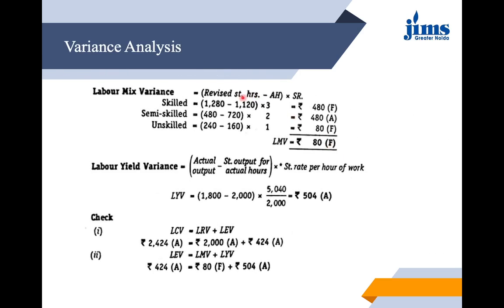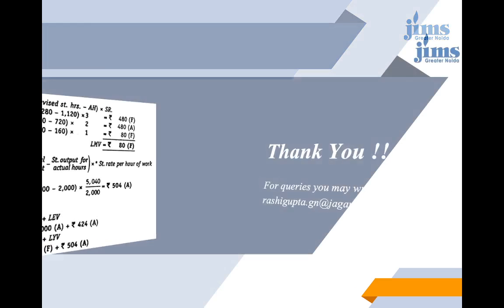For labor mix variance, using (Revised Standard Hours minus Actual Hours) into Standard Rate, we find a favorable labor mix variance of rupees 18. For labor yield variance, using (Actual Output minus Standard Output for Actual Hours) into Standard Rate per hour, we calculate the result. Finally, rate variance plus efficiency variance must equal cost variance, and mix variance plus yield variance must equal efficiency variance — confirming all computations are correct.